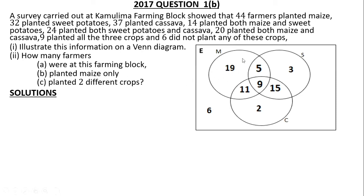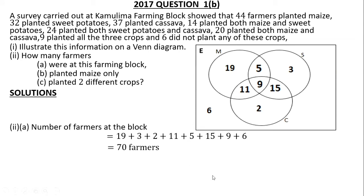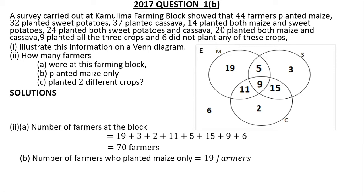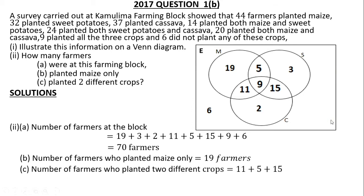To find the total farmers at this farming block, add everything together — there were 70 farmers. How many farmers planted maize only? 19 farmers planted maize only. How many farmers planted two different crops? Add 5 plus 15 plus 11, which gives us 31. There were 31 farmers who planted two different crops.